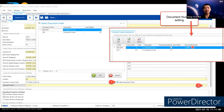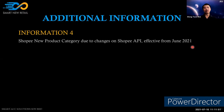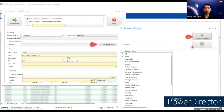Fourth additional information: Shopee's new product category has changed in the Shopee API, effective from mid-June. If you encounter the 'object reference not set to an instance of an object' error when selecting a category, go to the category selection and perform 'Download Category' to refresh. After that, you can select the new category and add items to the Shopee store.